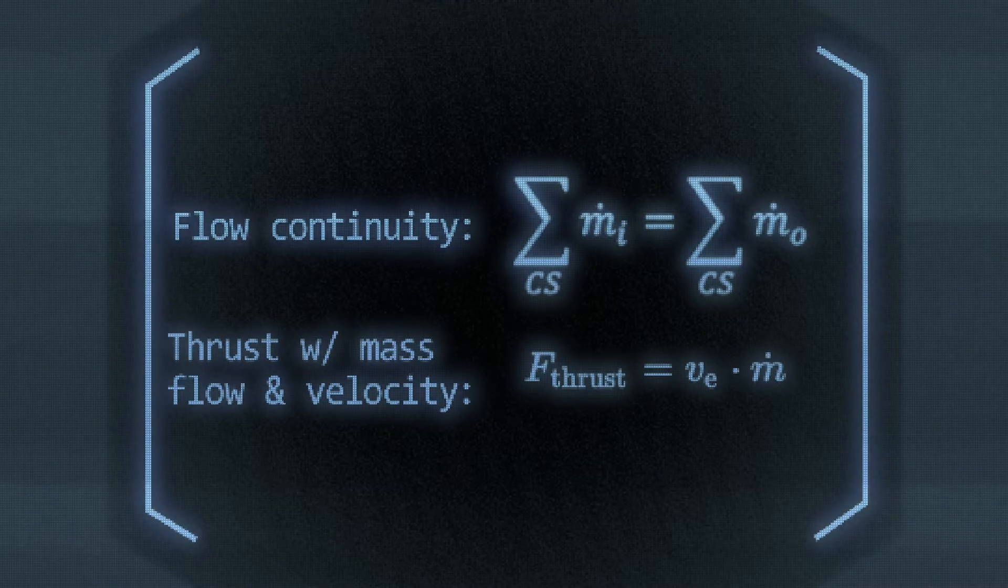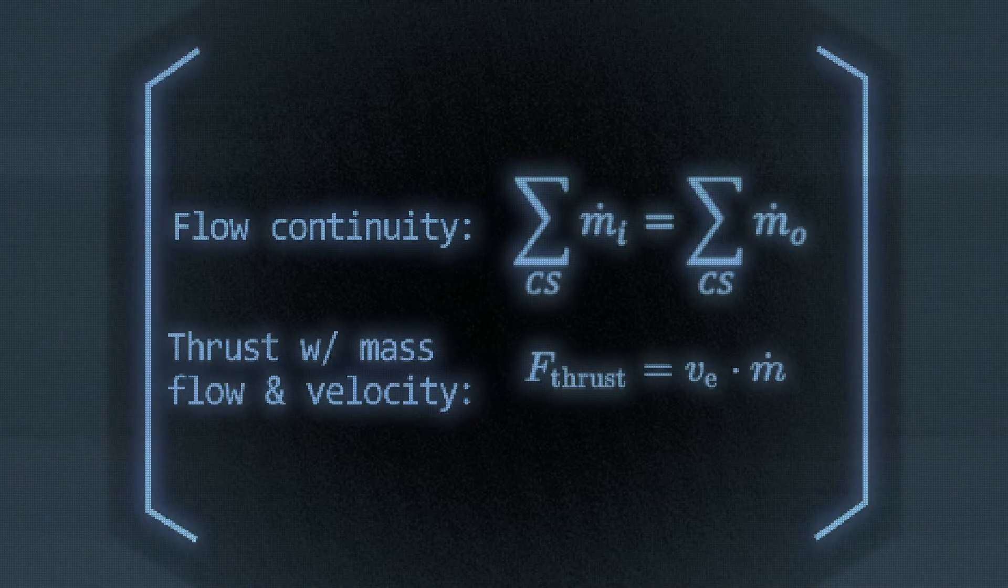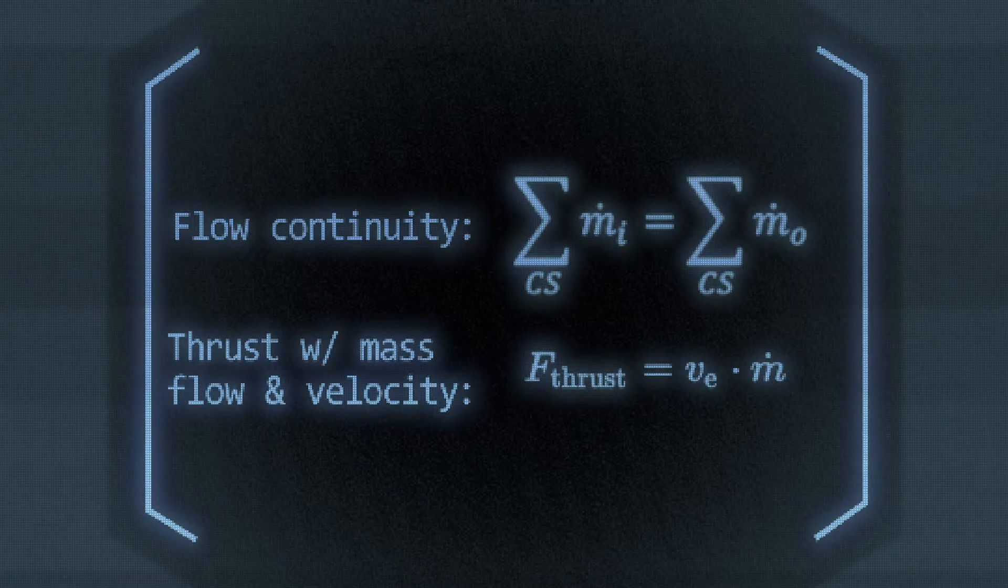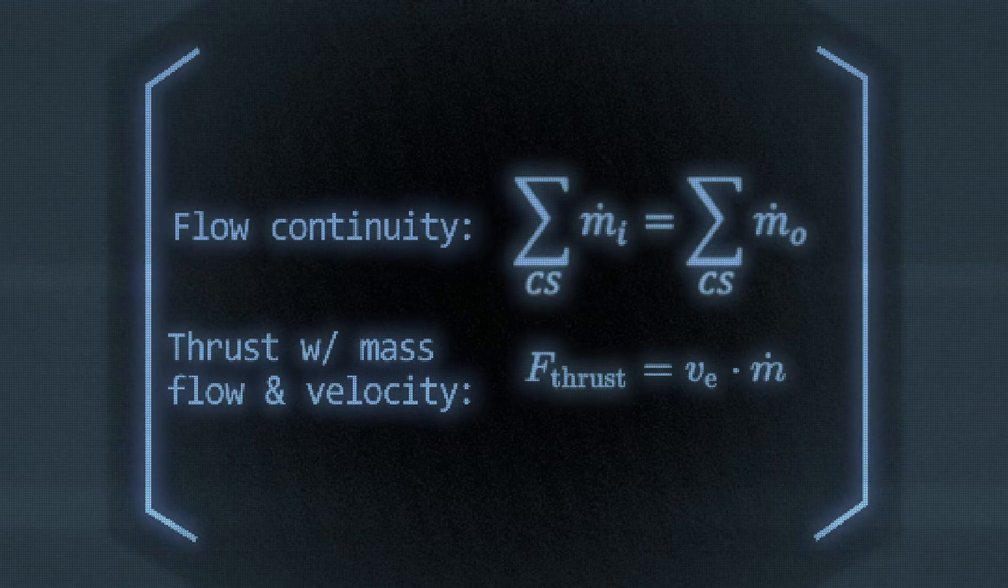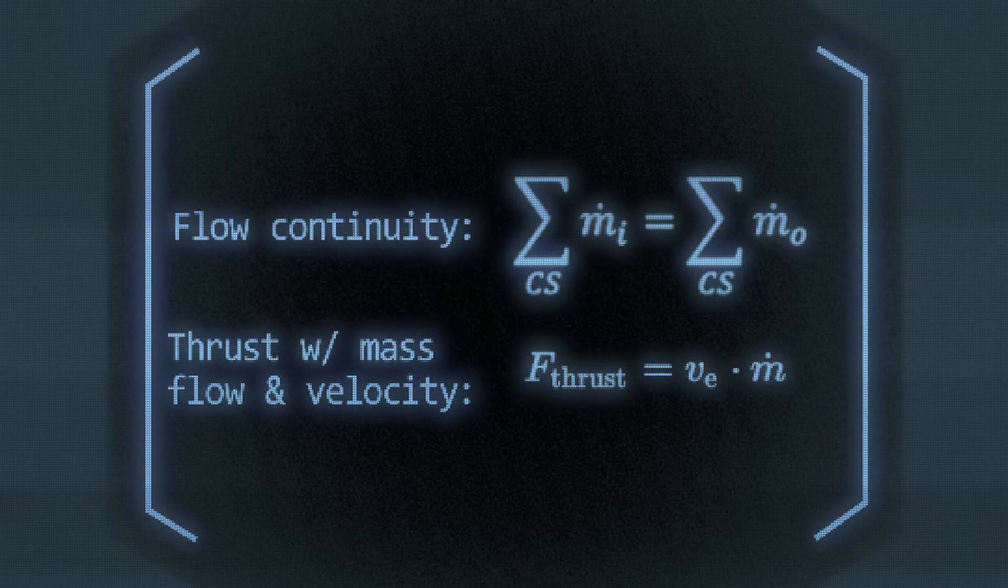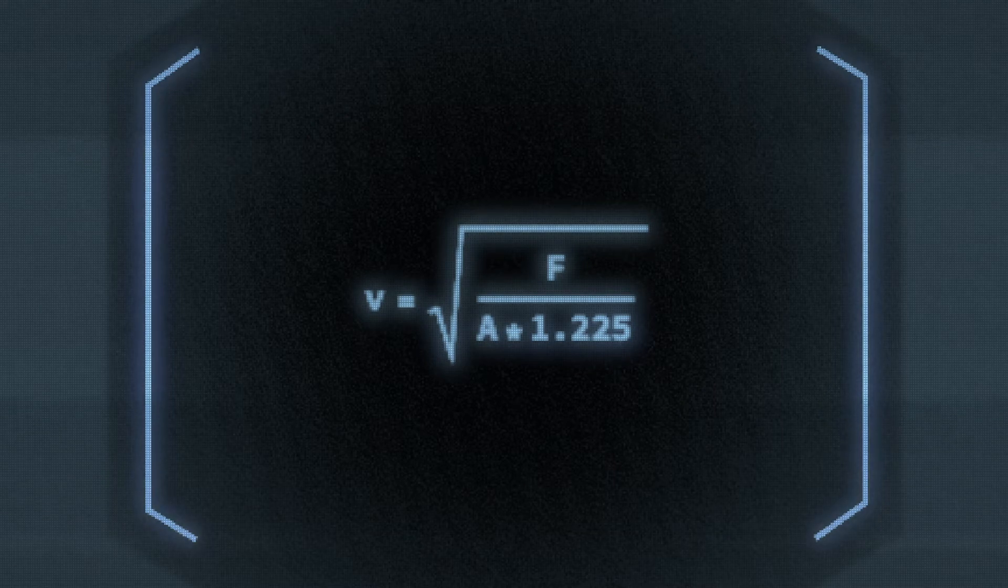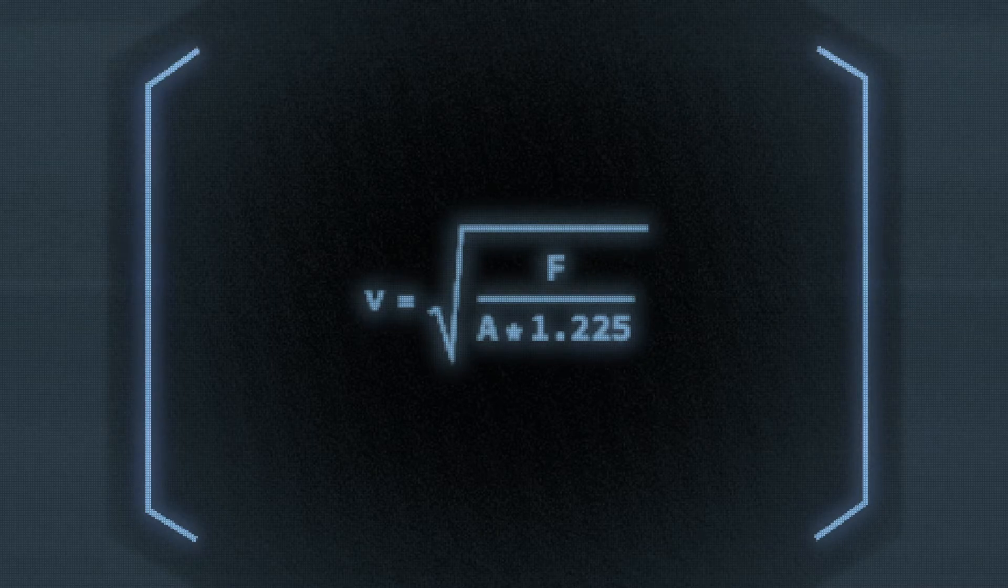Equations that will be used include flow continuity at a junction to determine how airflow will behave when separating in the pipes and mass flow rate because there is a relation between force which is needed for thrust and fluid continuity. These can be rearranged to give the velocity using force and area and density is 1.225 kilograms per meters cubed at sea level.